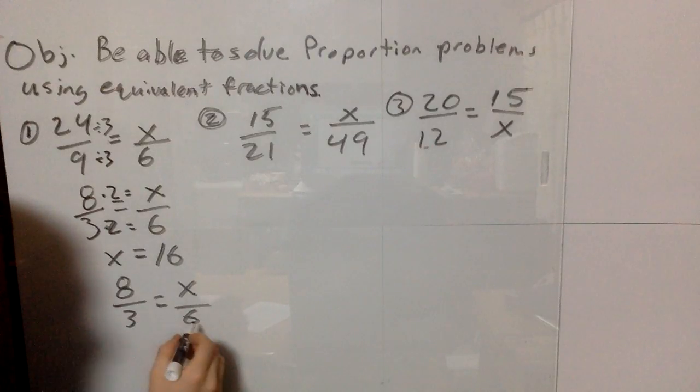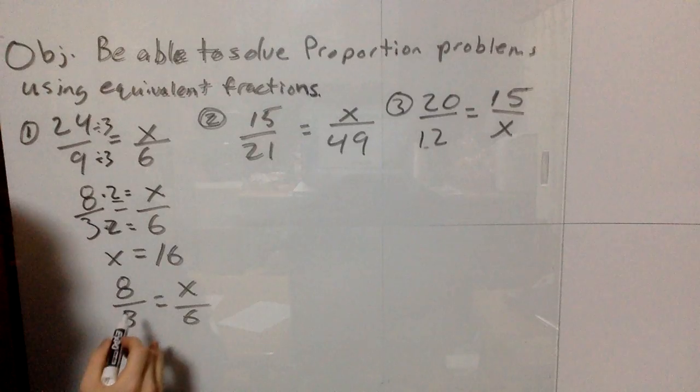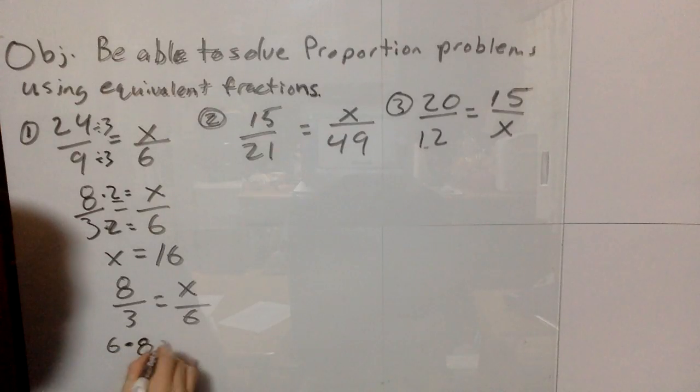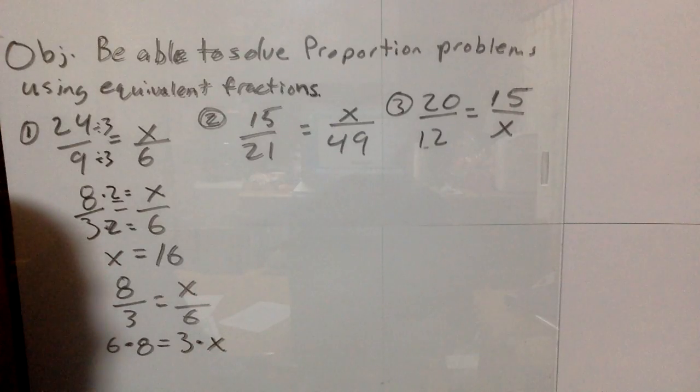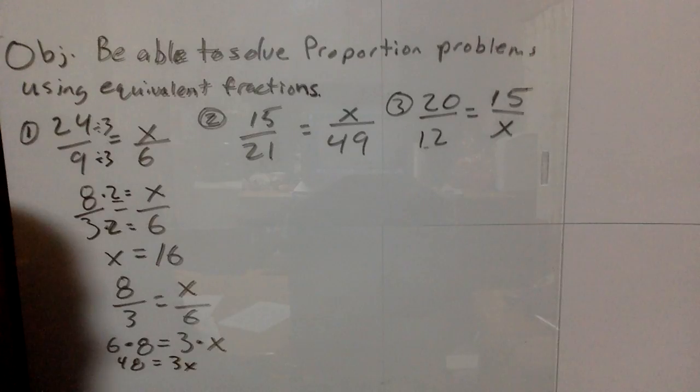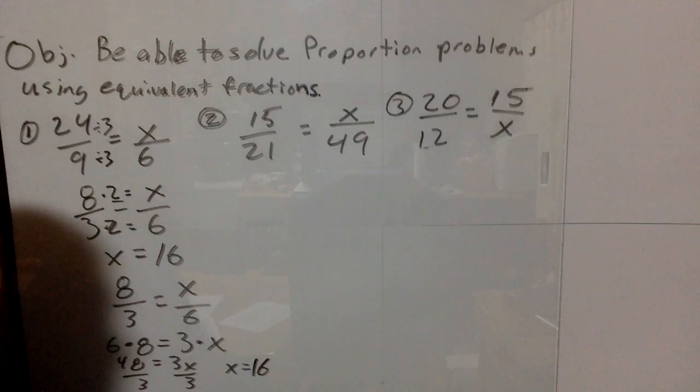You take the denominator on one side and multiply it times the numerator on the other side, and set that equal to the other denominator times numerator. So 6 times 8 equals 3 times x. That's called using cross products. 6 times 8 is 48, so 48 equals 3x. If we divide both sides by 3, we get x equals 16.